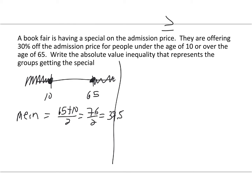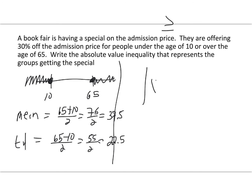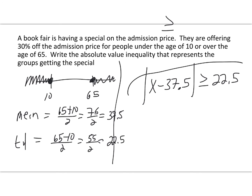Now for the tolerance: 65 minus 10 divided by 2 equals 55 divided by 2, which is 22.5. So the absolute value of x minus 37.5 is going to be greater than or equal to 22.5, because this is an 'or' statement. There's your statement — it's as simple as that. All right, that's the end of this video. Hopefully you got what you needed from this, and I'll see you next time.